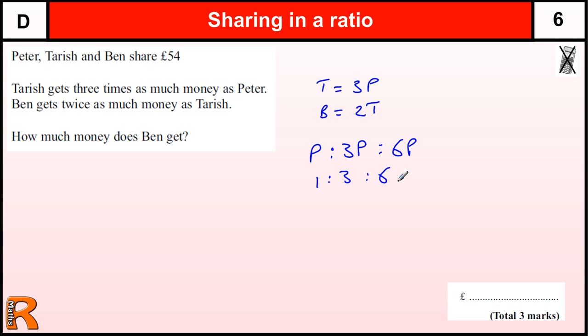So to share in this ratio we need to add up the numbers so that we know the total number of parts that we're going to share out. So there are ten parts to share out. We need to work out what each part is worth. So 54 divided by 10 is £5.40.